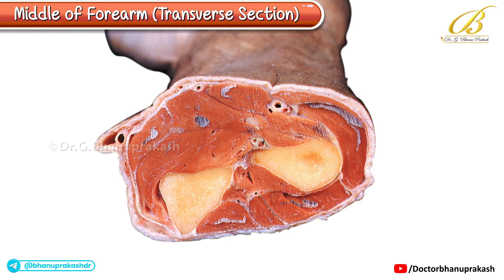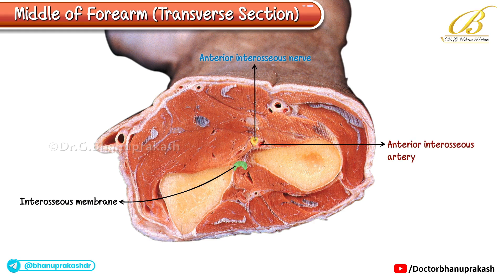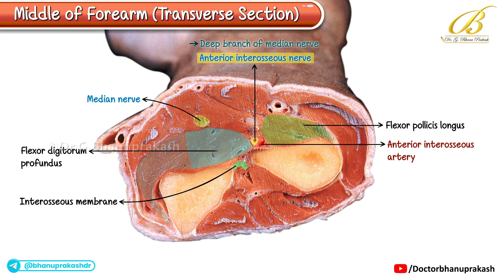Now let's look at another important neurovascular bundle present in front of the interosseous membrane. This bundle contains the anterior interosseous nerve and the anterior interosseous artery. The anterior interosseous nerve is a deep branch of the median nerve. It supplies the deep muscles of the flexor compartment, except for the medial half of the flexor digitorum profundus, which is supplied by the ulnar nerve. As the anterior interosseous artery travels downward in the distal forearm, it pierces the interosseous membrane to enter the extensor compartment, where it joins the posterior interosseous circulation.